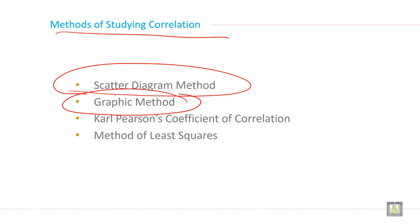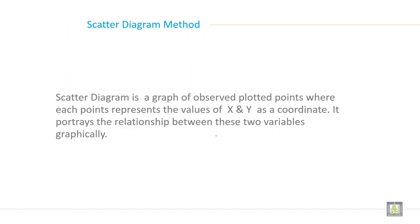The second is the graphical method. We study the relationship through graphs. Carl Pearson's coefficient of correlation is the third method, and the method of least squares is the fourth method. So there are four methods available to study the relationship between two or more variables.